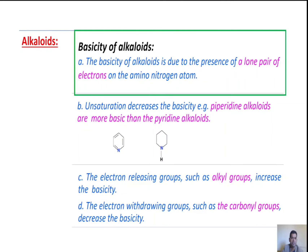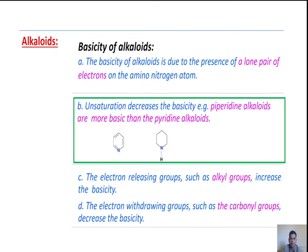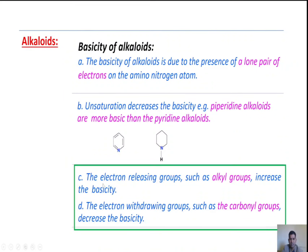Next topic, basicity of alkaloids. The basicity of alkaloids is due to the presence of a lone pair of electrons on the amine nitrogen atom. Unsaturation decreases the basicity — for example, piperidine alkaloids are more basic than pyridine alkaloids. The presence of electron-releasing groups such as alkyl groups increases the basicity. The presence of electron-withdrawing groups such as carbonyl groups decreases the basicity.